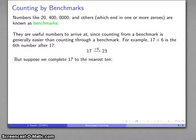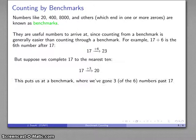On the other hand, what I might do is I might complete seventeen to the nearest ten, and completing seventeen to the nearest ten puts us at twenty.